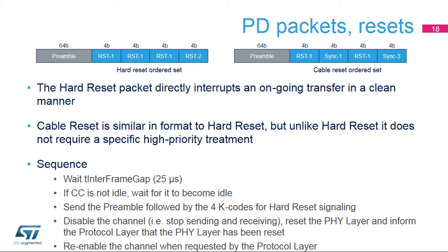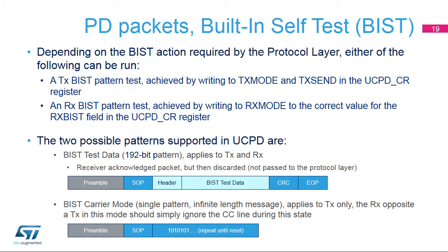The PD specification describes built-in self-test (BIST) packets used to test whether the CC line is functional. BISTs are sent on a software decision based on fields in the UCPD CR register. Software can enforce transmission of a BIST packet and configure the receiver in test mode; received BIST packets are not submitted to software, however their CRC is checked. Two formats of BIST packets are defined: BIST test data, which is a packet containing a payload used to test the digital controller, and BIST carrier mode, which is a single-pattern, infinite-length message used to test the physical link by capturing the CC line on an oscilloscope.